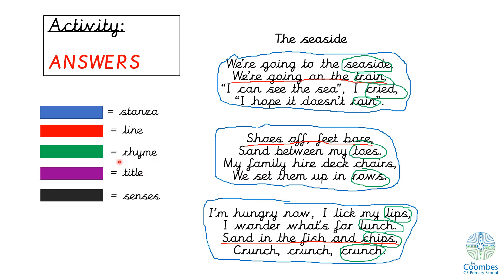Next we move on to our title. The title tells us the name of the piece of text. At the top, underlined and in bold writing, our title is 'The Seaside' — I'm going to highlight that in purple. And last but not least, we move on to senses. In the first stanza, the writer says 'I can see the sea,' so I'm going to highlight that in black because that's talking about our sense of sight.